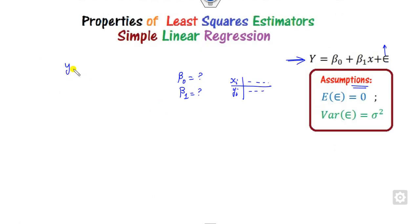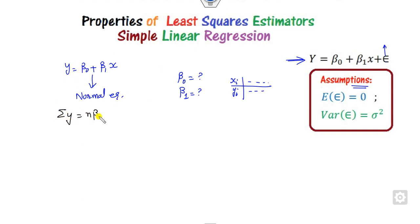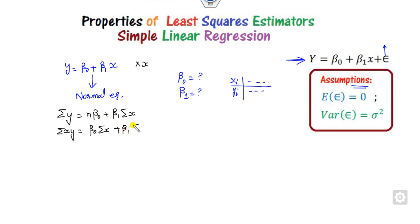To find the values of beta-naught and beta-1, you write the normal equations. You put the summation on both sides of the equation to get the first normal equation, then multiply by x and put the summation on both sides to get the second. After solving these two equations, you can easily get the values of beta-naught and beta-1.